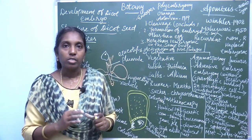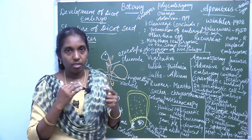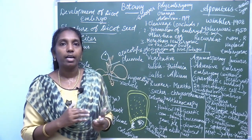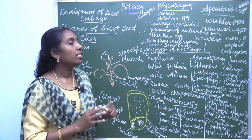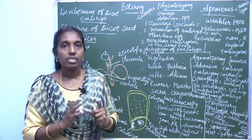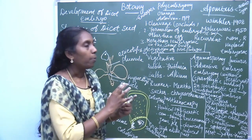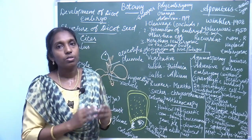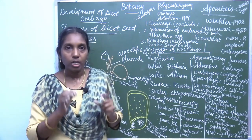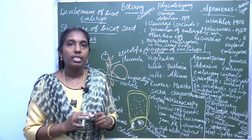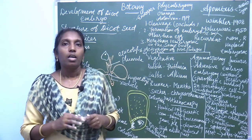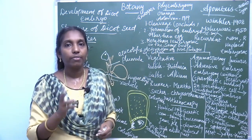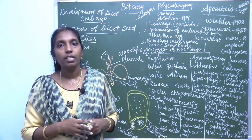Meiosis is the process by which sporophytic cells divide, reducing their number to form haploid gametes — male gametes and female gametes. This process is absent in apomixis. Apomixis does not involve meiosis and syngamy. Syngamy is the union of male and female gametes, and this process is also absent. The term apomixis was first introduced by Winkler in the year 1908.